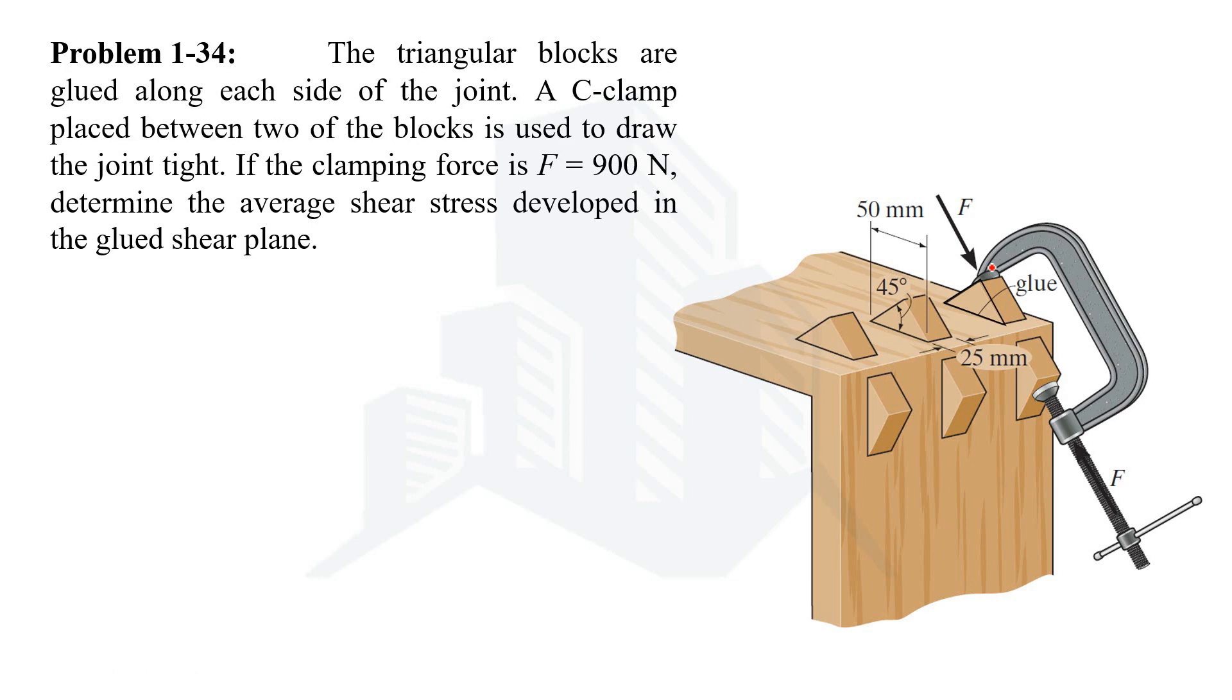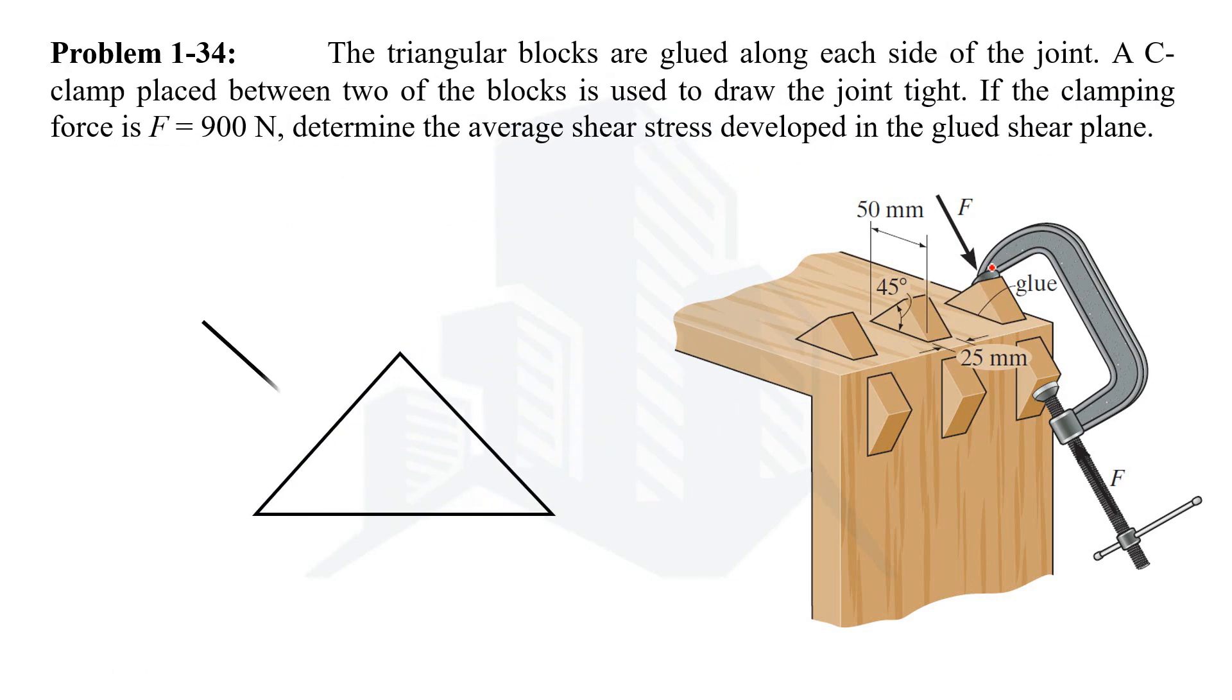So again drawing the free body diagram of this triangular block, the same force is being applied. Now we are being given with the value of that force which is 900 newtons. Same story. The horizontal component of this force should be balanced by the shear stress that is being developed at the glued plane. So this horizontal force would be equal to 900 cos 45 since this angle is 45 degrees.